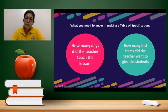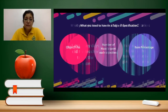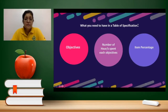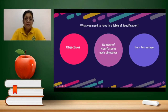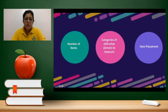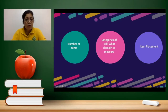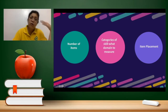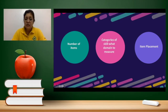What do you need to know in making a table of specification? First, how many days did the teacher teach the lesson? Second, how many test items does the teacher want to give the students? Next, the objectives — the topic can also be included there — the number of hours or days spent per objective, the item percentage, the number of items, and the categories of skills to be measured. These categories include lower-order thinking skills, which cover knowledge, up to higher-order thinking skills, which cover evaluation and creating. The last column is item placement, where you can find the different items.